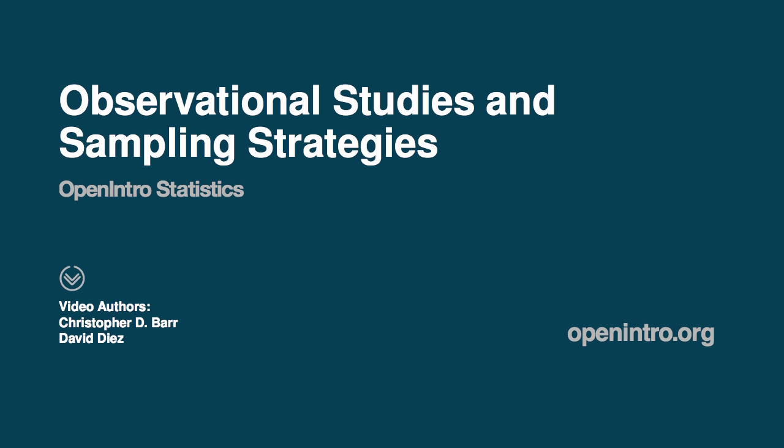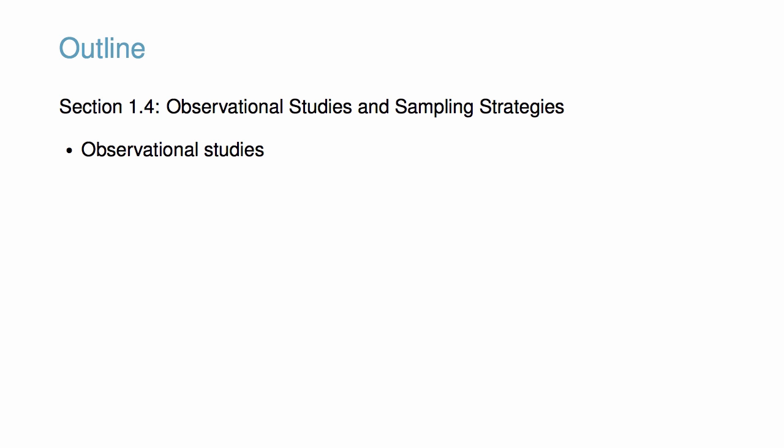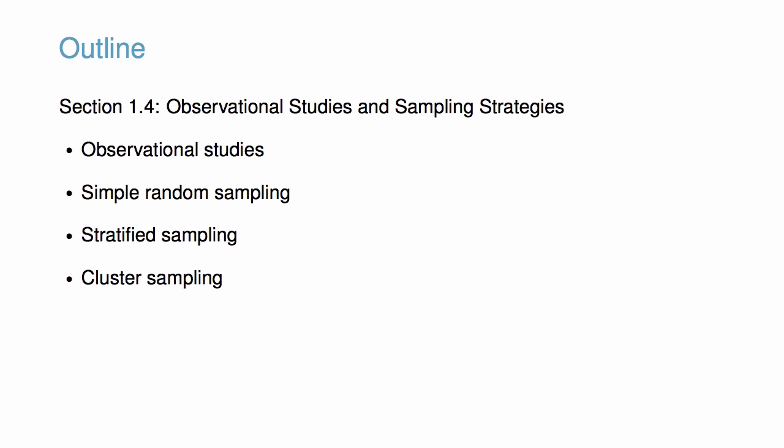This video accompanies the discussion of Observational Studies and Sampling Strategies in OpenIntro Statistics. We will learn about two types of observational studies and three types of sampling, including the fundamental approach of simple random sampling, the divide-and-conquer approach of stratified sampling, and a two-stage approach called cluster sampling.